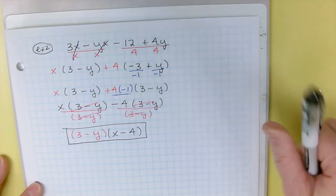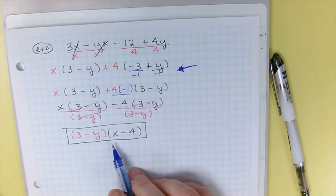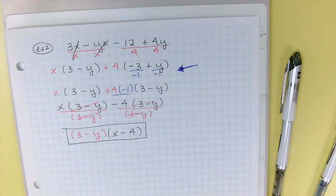So that's how you handle if they're almost the same, but they differ by a negative, you want to divide a negative out. All right. That is the end of the notes. Are there any questions about factor by grouping?